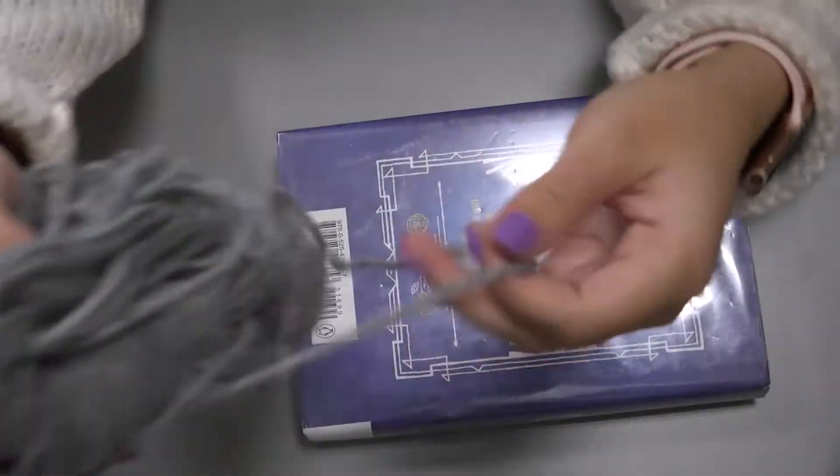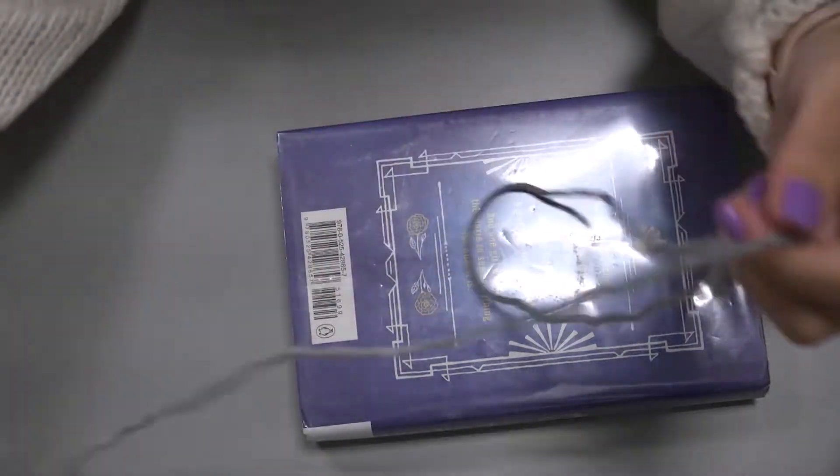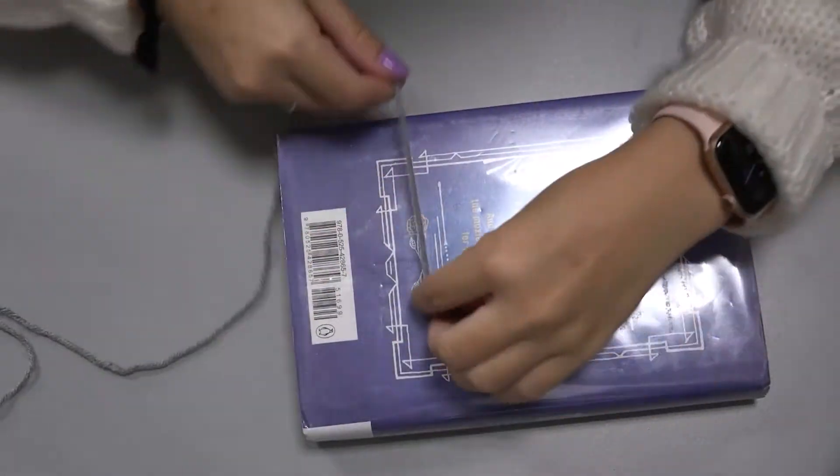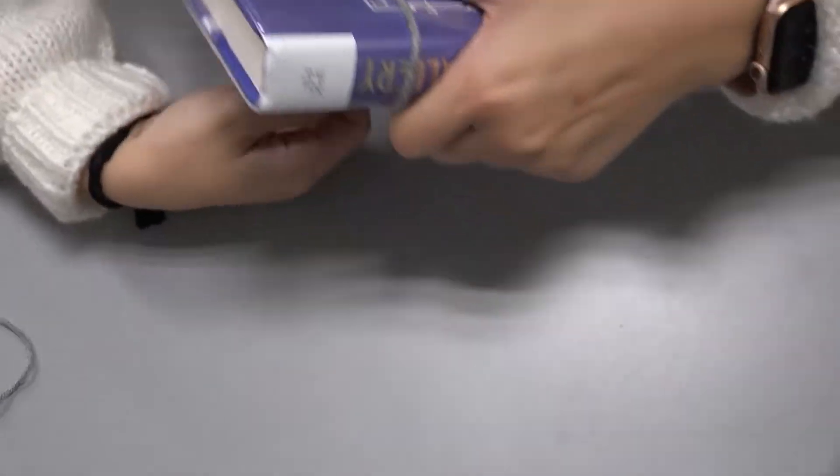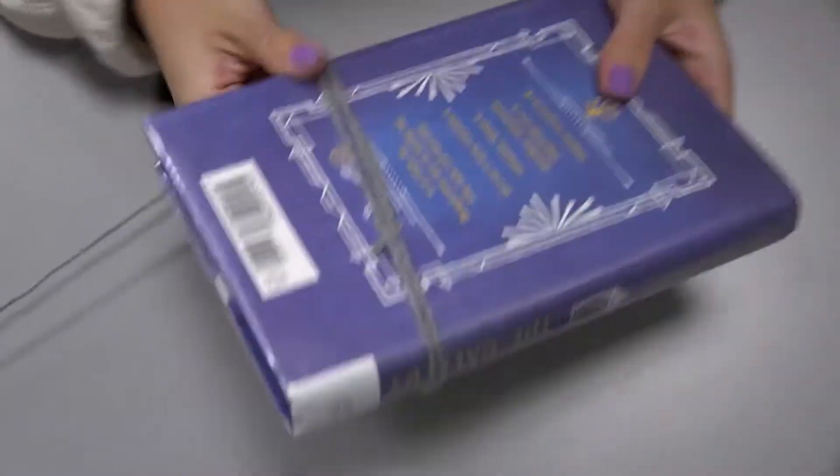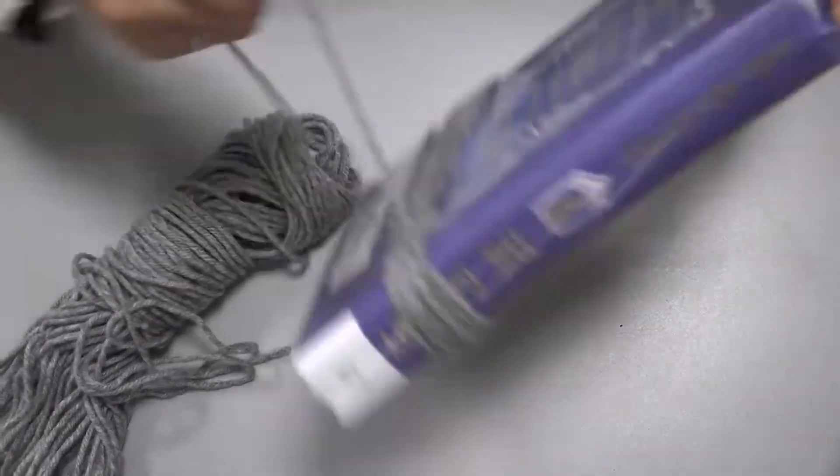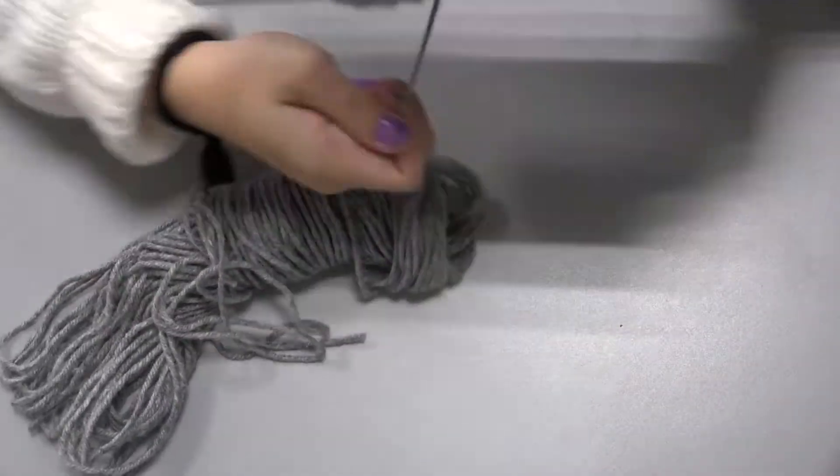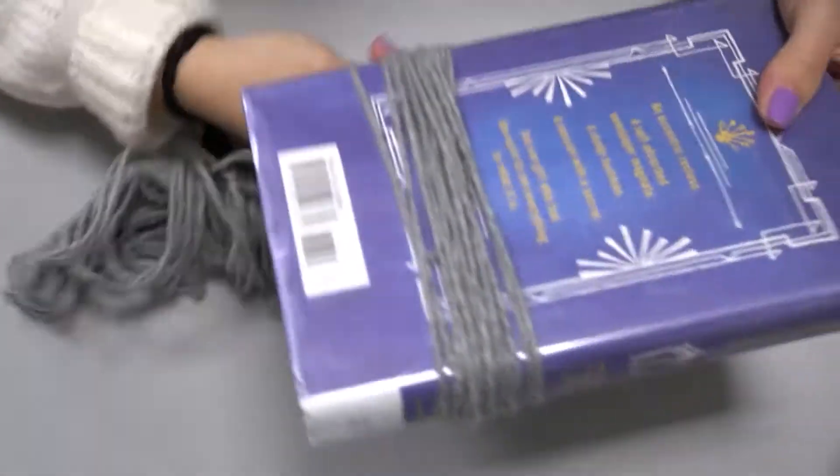So first what you're going to do is find the end of your yarn. And you're going to wrap the yarn around the book a lot. And depending on how big you want the ghost to be, that's the amount of times you want to wrap your yarn around your book.